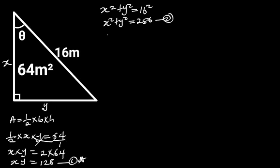From equation 1, if we make x the subject of the formula, we will have x is equal to 128 over y. Let's call this equation 3. If we substitute x with 128 over y in equation 2, we will have.